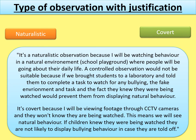The stimulus really dictates that this is going to be a naturalistic observation and it's going to be covert, because you're going to watch children in a playground where they're worried about bullying. You would say it's a naturalistic observation because you'll be watching behaviour in a natural environment — the school playground — where people will be going about their daily life. You might also justify why you're not choosing a controlled observation: a controlled observation would not be suitable because if you brought students to a laboratory the fake environment would prevent them from displaying natural behaviour.